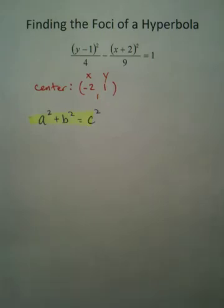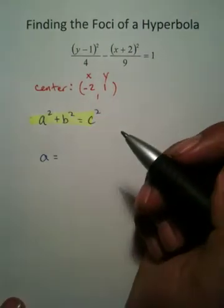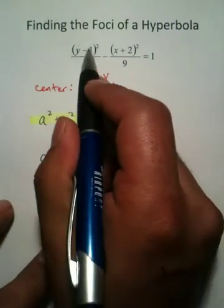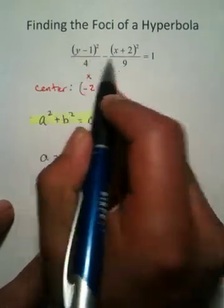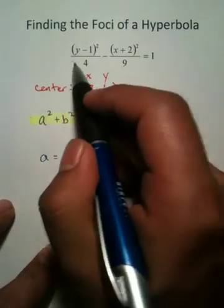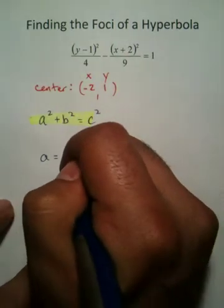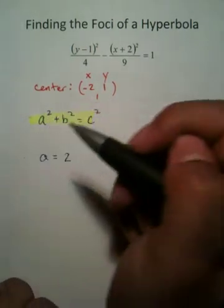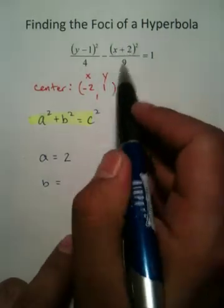Now, the way you find A and B in this is completely different than you find A and B with an ellipse. A happens to be the square root of what's called the positive rational expression. So you have two rational expressions here, which means fractions. You have two fractions, and this one's positive and this one's negative. A is the square root of the positive. B is the square root of the negative rational expression.